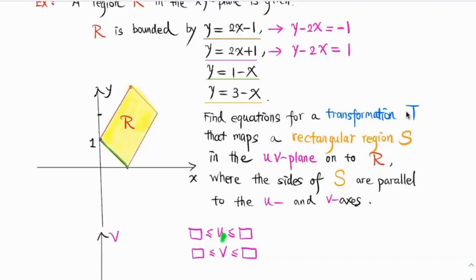So it makes sense to let U be Y minus 2X. We're going to do that. We let U to be Y minus 2X. And similarly,